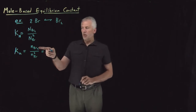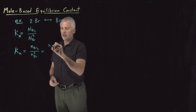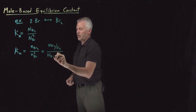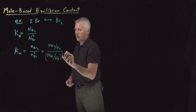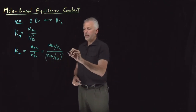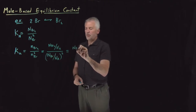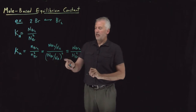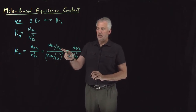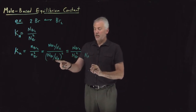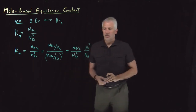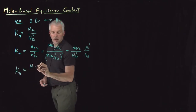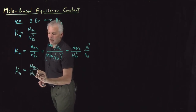We know the connection between moles and molecules of any species: the moles of Br2 is just molecules of Br2 divided by Avogadro's number. In the denominator, that whole quantity is squared. If I simplify this expression, I've got molecules of Br2 in the numerator, molecules of Br in the denominator squared, and then Avogadro's number showing up once in the numerator and twice in the denominator.